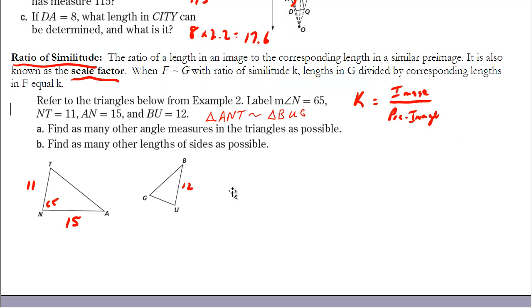So let's take a look at this second example. It says, refer to the triangle below from example 2. And remember in example 2, triangle ANT was similar to triangle BUG. And it says, label N is 65, which I did, and T is 11, and AN is 15, and BU is 12. And then it says, find as many other angle measures in the triangle as possible. Well, if we only know one angle measure of this one, we're only going to know one angle measure of this one. And since N corresponds with U, what that means is that U must also be 65 degrees. And I'll put the new angles, or the new measurements in blue here. And then, that's the only angle measure that we can get, because we don't know anything about the other two angles in the triangle over here on the left ANT.